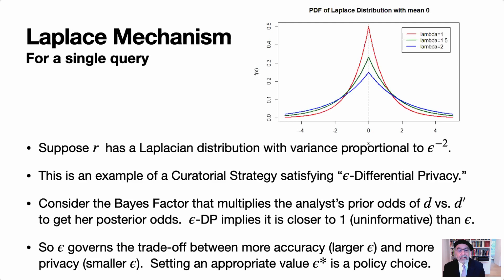To give more detail: if you draw R from a Laplacian distribution with variance proportional to 1 over epsilon squared, this is called epsilon differential privacy — an example of a curatorial strategy. What it says precisely is that the base factor multiplying an analyst's prior odds of D versus D prime — of being able to tell if I'm even in the data set — is what you multiply to get her posterior odds. Epsilon differential privacy implies that factor is bounded closer to one than epsilon. So epsilon governs the inevitable tradeoff: larger epsilon corresponds to more accuracy, smaller epsilon corresponds to more privacy.